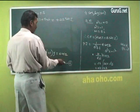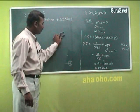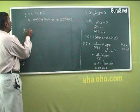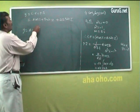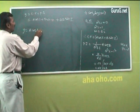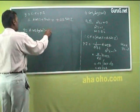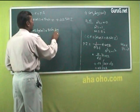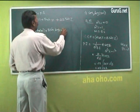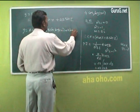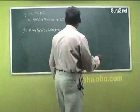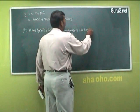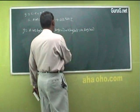Substituting back z = log(x+1), the solution of the original equation is: y = A cos(log(x+1)) + B sin(log(x+1)) + 2·log(x+1)·sin(log(x+1)), which is the complete solution.